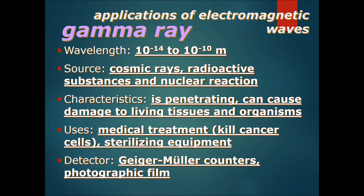When gamma rays enter cells, they can alter or change the DNA in your cells, which increases your chance of cancer. One use is medical treatment — for example, gamma rays can be used to kill cancer cells. It's quite interesting because gamma rays can both cause cancer in cells and also be used to kill cancer cells.